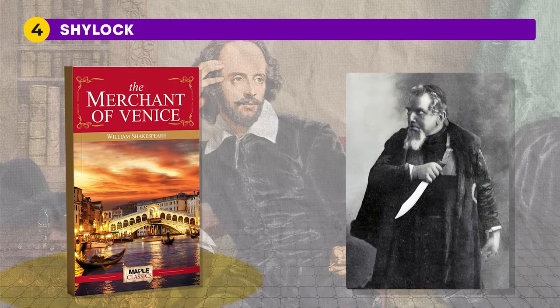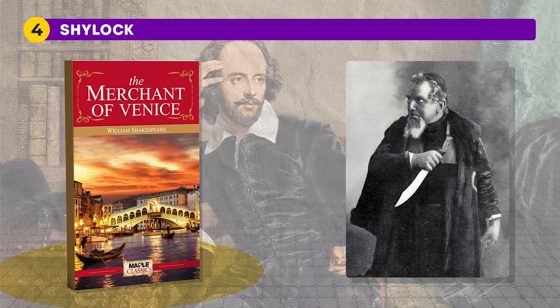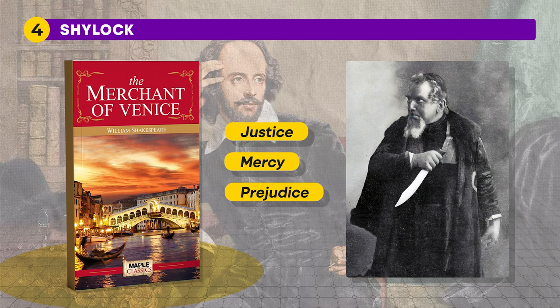Then we have Shylock, a complex character from Shakespeare's play The Merchant of Venice. He is a Jewish moneylender living in Venice who faces discrimination and persecution due to his religion. Shylock is often portrayed as both a victim of prejudice and a villain due to his ruthless pursuit of vengeance. In the play, he lends money to the merchant Antonio with the condition that if the loan is not repaid on time, Shylock will be entitled to a pound of Antonio's flesh as collateral. When Antonio's ships fail to return, Shylock demands his pound of flesh in court. His character embodies themes of justice, mercy, and prejudice.